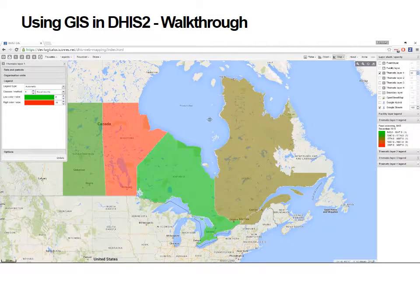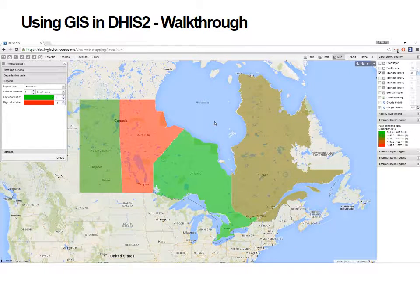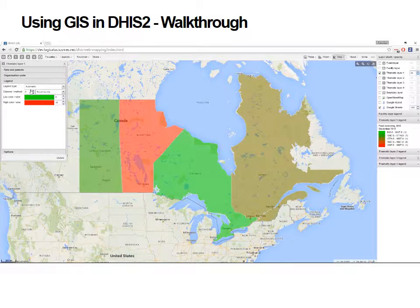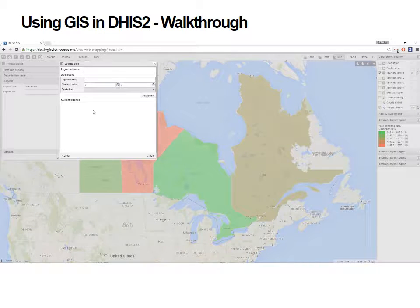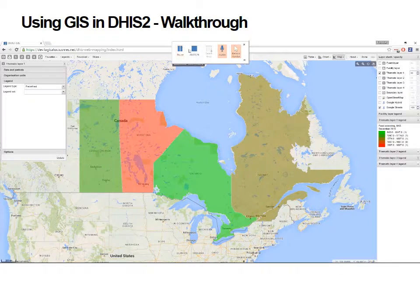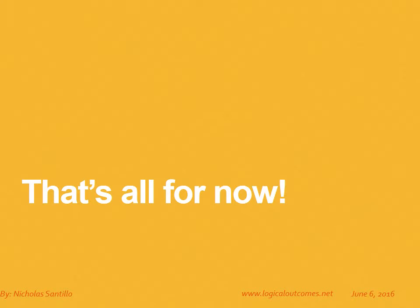That's a very basic overview of how to use GIS. Once everything's in, it's very simple and intuitive to use. You can add layers on top of themselves and stack them, change the colors, and save these as legend sets. The legend sets, which you create by adding a new one, are what you'd then choose in your pivot table to have a heat chart — coloring cells based on data. That's how you use GIS. You can get in touch with us at info at logicaloutcomes.net or on our YouTube channel, Logical Outcomes.